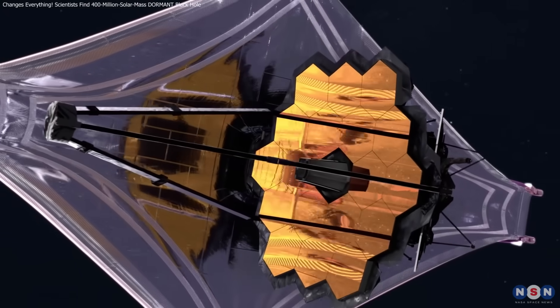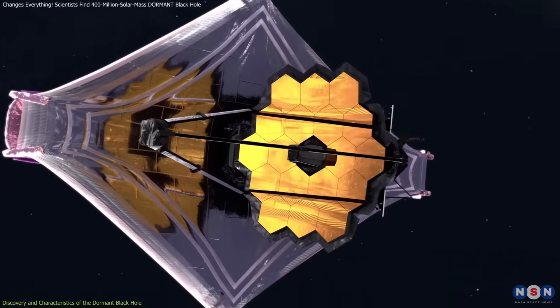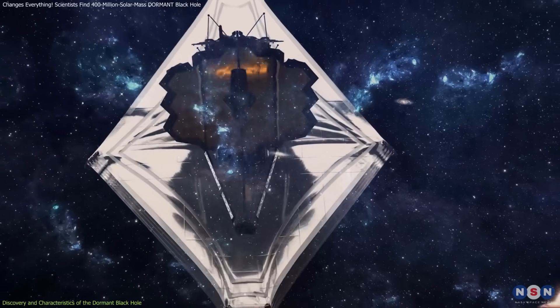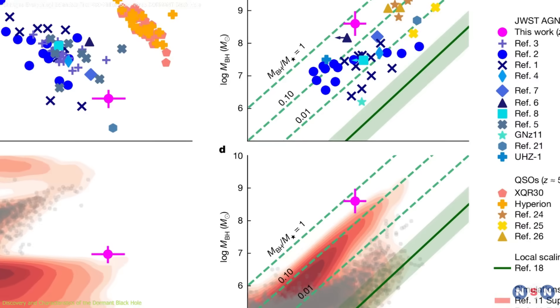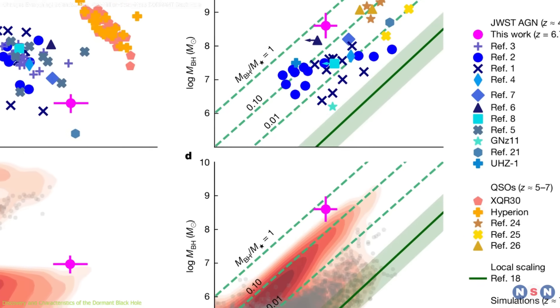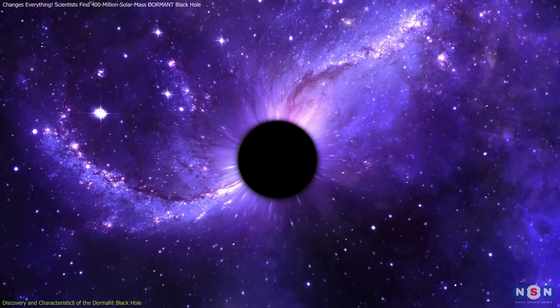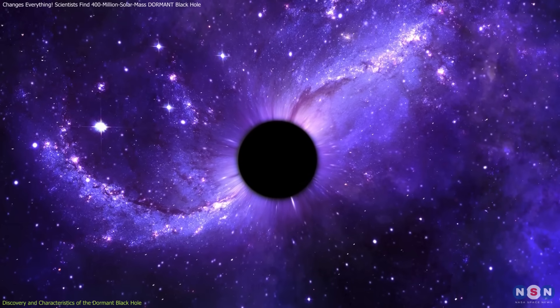The James Webb Space Telescope is redefining how we see the universe. Among its many discoveries is this dormant black hole, one of the largest found at such an early stage of the universe. Let's start with how scientists detected this cosmic giant.